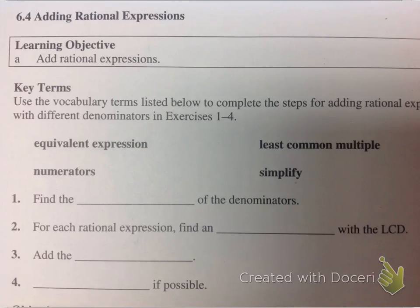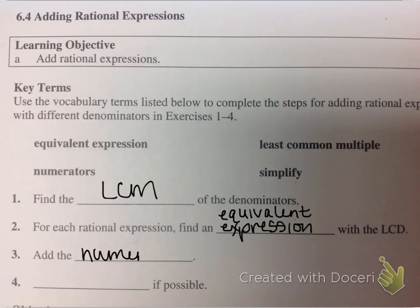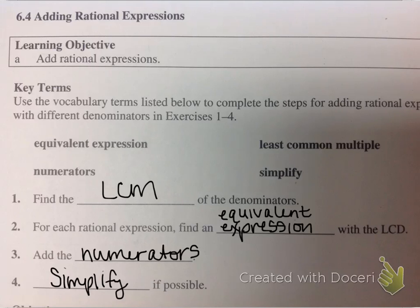Now we're going to start adding rational expressions. We're going to use what we learned previously with least common denominators and least common multiples to help us get common denominators with rational expressions. The first step is to find the least common multiple of the denominators, find an equivalent expression with the LCD, add the numerators, and then simplify if possible. These are the same steps you use when working with fractions in general, and now we're going to apply this to rational expressions.